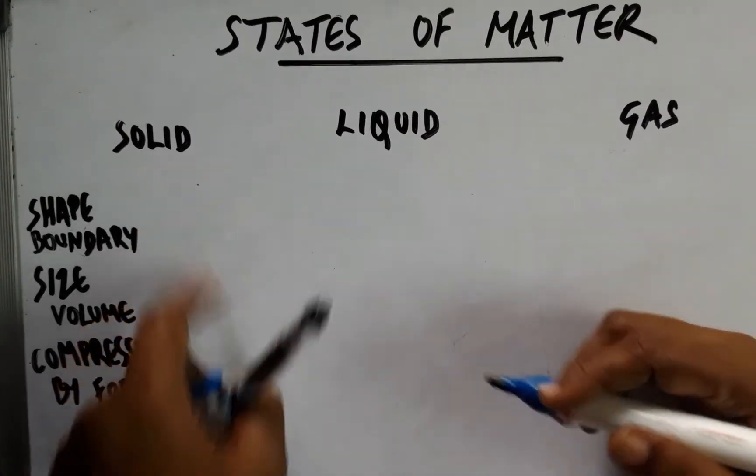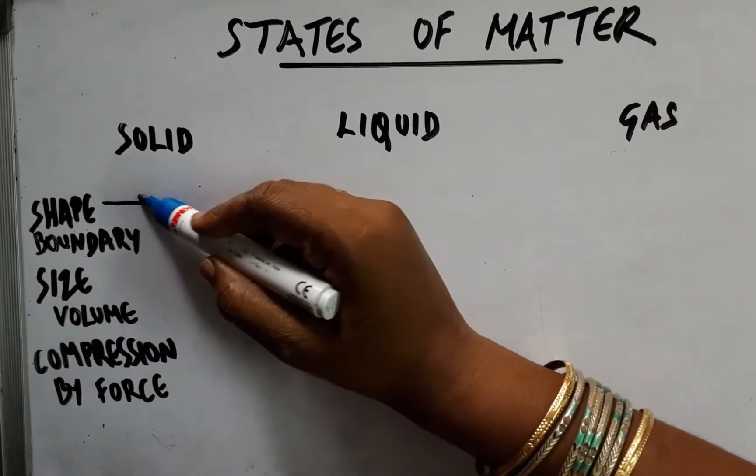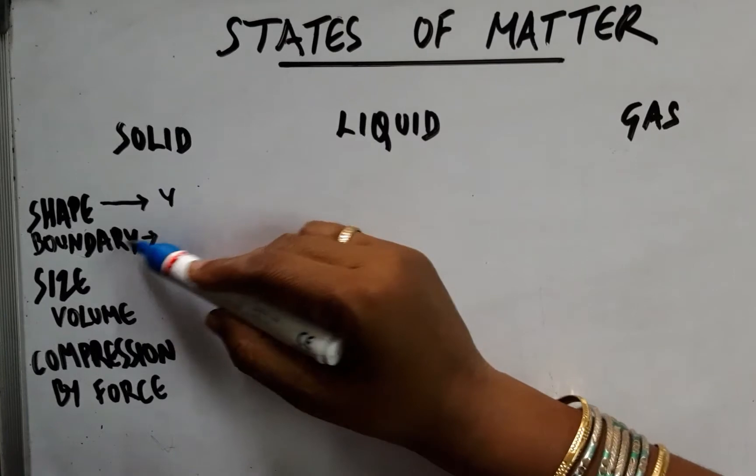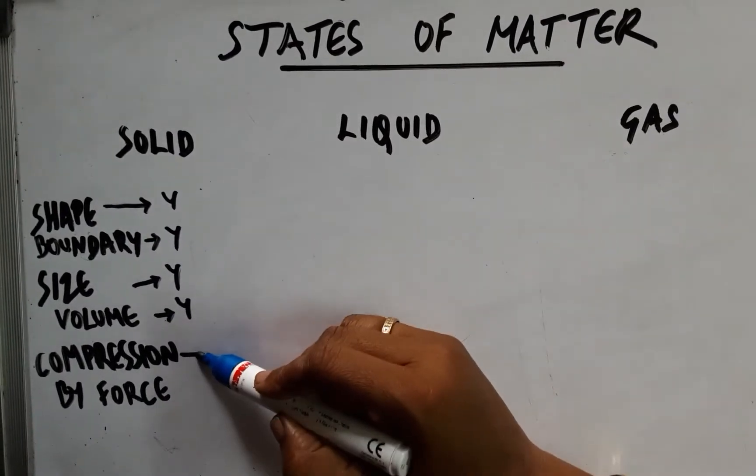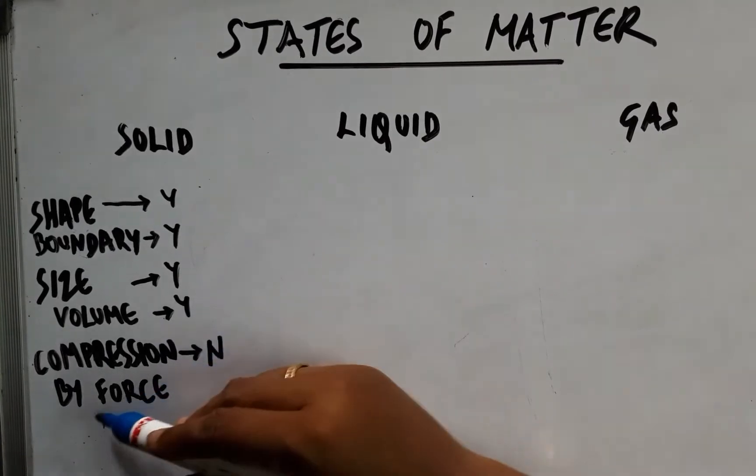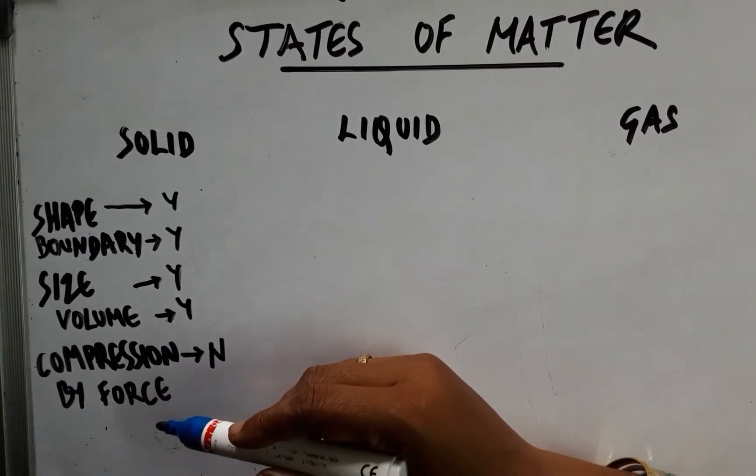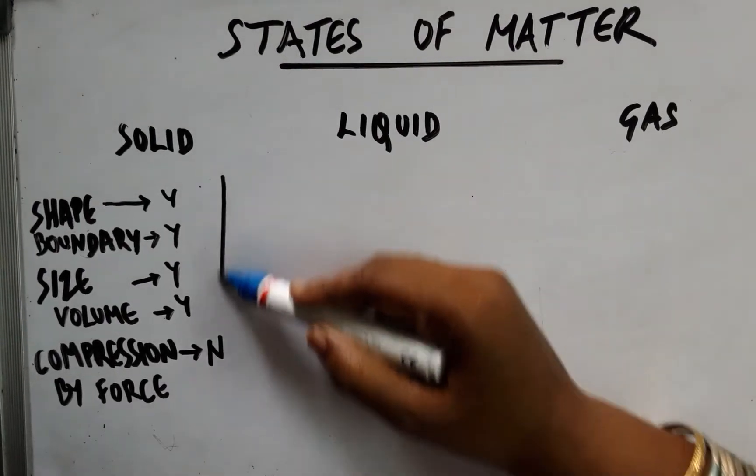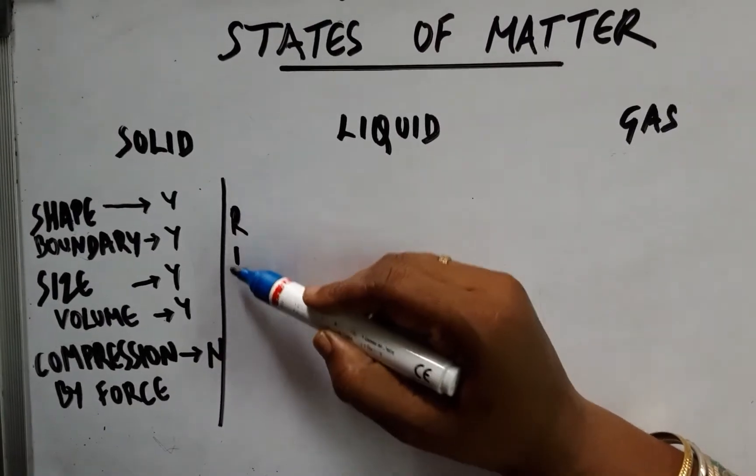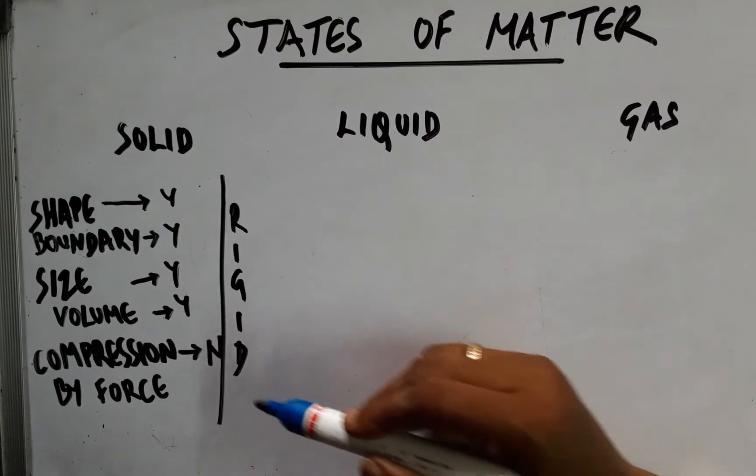So I have a definition of solid. They have fixed shape and fixed boundary and fixed size and fixed volume and they cannot be compressed by application of external force to some extent. So all of this denotes that solids are rigid bodies.